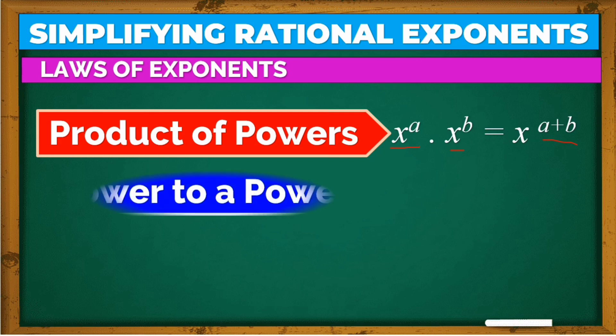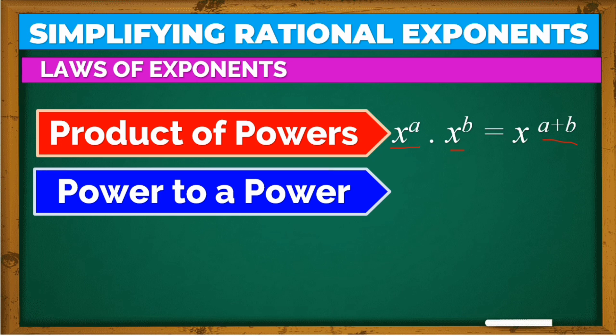Another law of exponents is power to a power. In power to a power, we multiply. So when we see an exponent raised to another exponent, what we do is multiply them. That's it — we multiply.